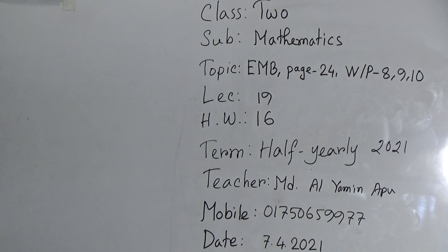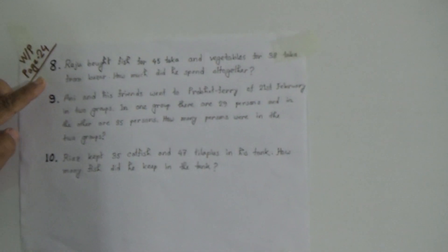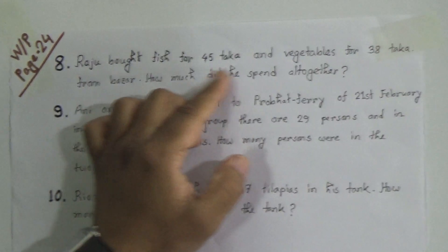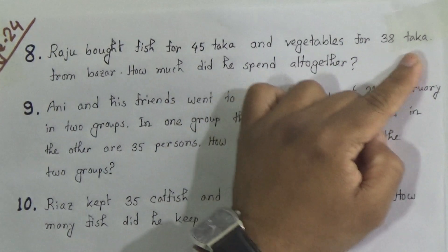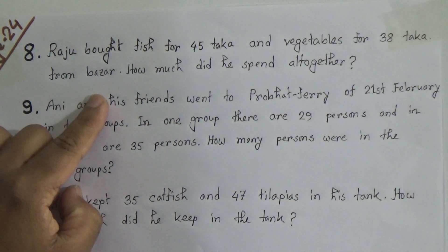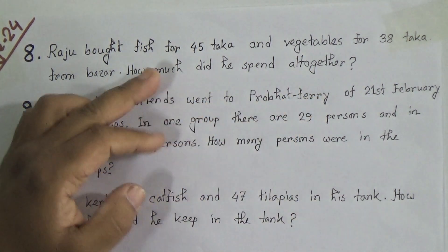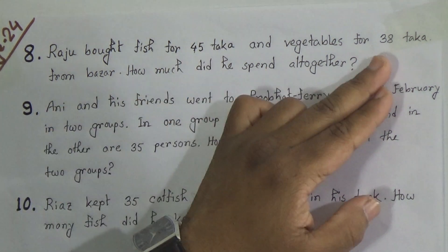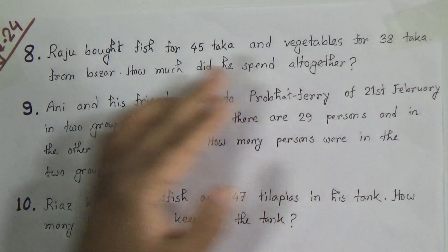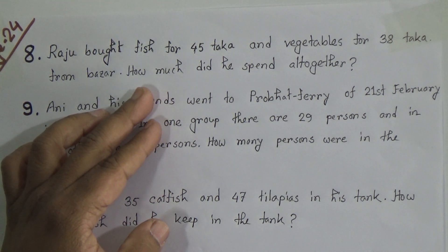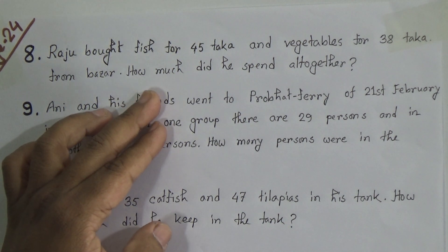Now we are going to solve the problems. The first one is question number 8. I have written down the 3 questions here already. Question number 8 is: Raju bought fish for 45 taka and vegetables for 38 taka from Bazar. How much did he spend all together? That means Raju spent these 2 amounts at the Bazar, so we need to add to calculate the total expenditure.